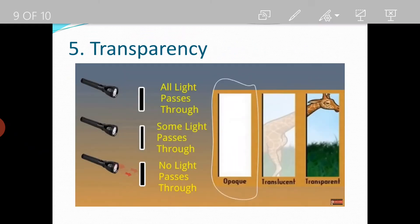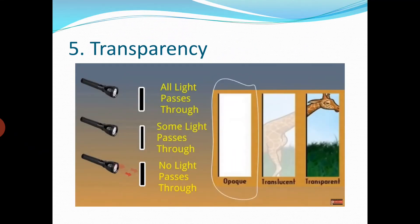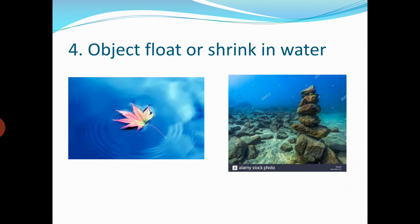Now let us look at floating materials. As I said, objects either float or sink. A leaf is an example of a floating material, and a stone is an example of a sinking material — it goes down under the water.